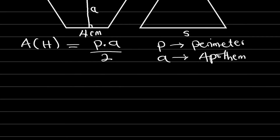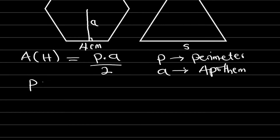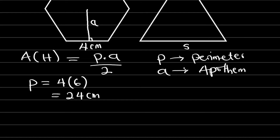Let us start with the perimeter. The perimeter is equal to the total length around a figure. So we have 4 multiplied by the total number of sides, which is 6, and this is equal to 24 cm. Our perimeter is 24 cm.